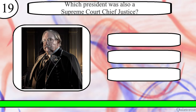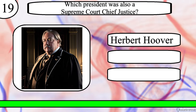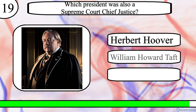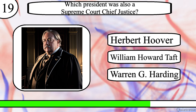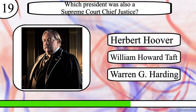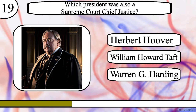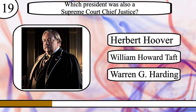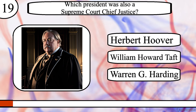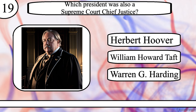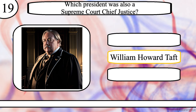Question 19. Which President was also a Supreme Court Chief Justice? Herbert Hoover, William Howard Taft or Warren G. Harding? The correct answer is William Howard Taft.